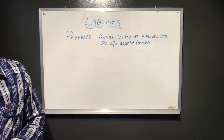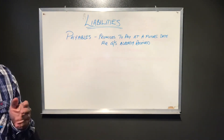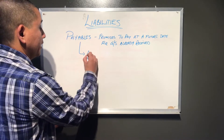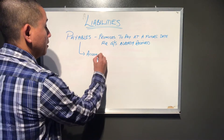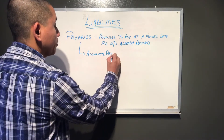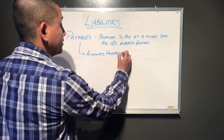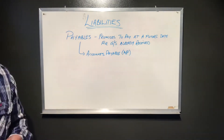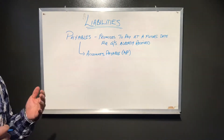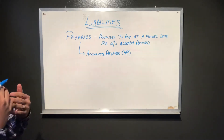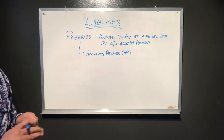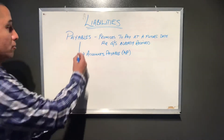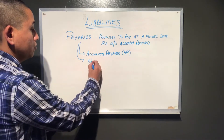We can further break down these payables into what we call accounts payable, also known by the short form AP. Accounts payable are promises to pay at a later date for certain assets or services that have already been received. Another example is notes payable.